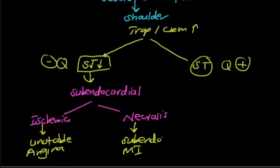Now what about the other things? If you have ST elevation with positive Q wave, what is the tissue involved? I am talking about transmural tissue - the whole thickness.